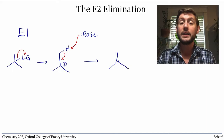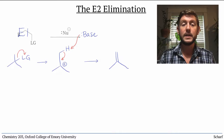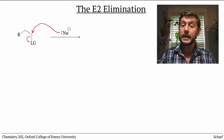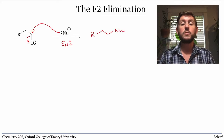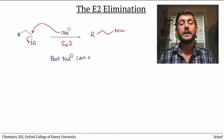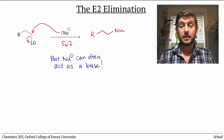Elimination can occur by another mechanism as well: the E2 elimination. In the presence of a strong nucleophile, leaving groups can be displaced in SN2 reactions, and this was pretty understandable from a basic understanding of HOMOs and LUMOs. But strong nucleophiles can often act as strong bases as well, deprotonating molecules.